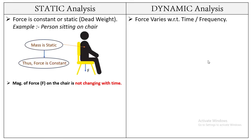The example of static analysis is a person sitting on a chair. Since the weight of the person is going to be constant or static, we can say the force on the chair is constant, or the magnitude of force F on the chair is not changing with time.